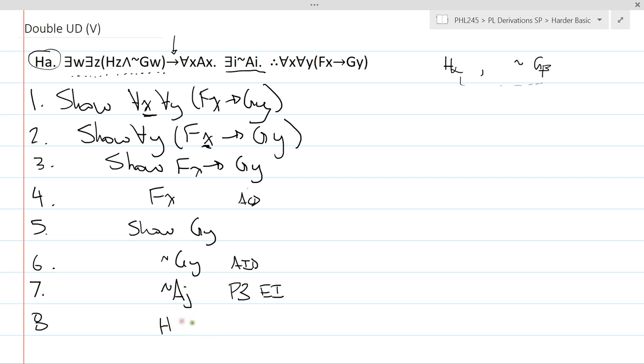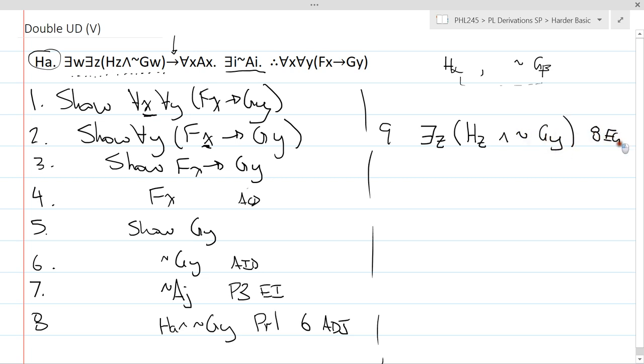Instead, I'll actually just join HA and not GY together. That's premise one, six, adjoin. And then over here on line nine, I can, sorry, I forgot my A, I can existentially generalize. Now, again, I'm just going to do it one step at a time. First, I existentially generalize my H to Z and I leave my not GY alone. And that's line eight, EG. And then here on line 10, I will existentially generalize my G predicate to W because I need a perfect match with the antecedent of premise two. So this is line nine, EG.